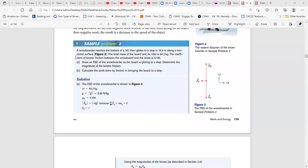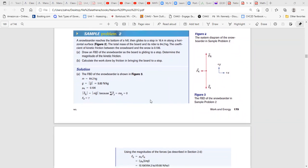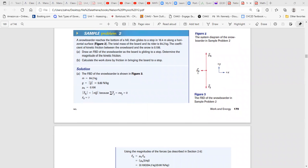Now, here is another example. In snow, water reaches the bottom of the hill, then glides into the twist top in 16.4 meters along horizontal distance. The total mass of the board is given. The coefficient of the kinetic friction between the stone bubbles is given to you. Draw the FBD diagram. Determine the magnitude of the kinetic friction. So knowing that this is a stopping force.